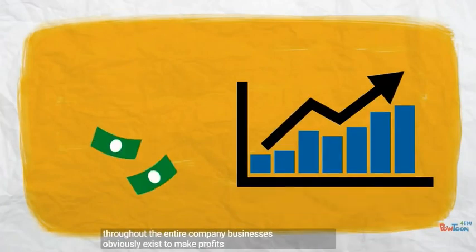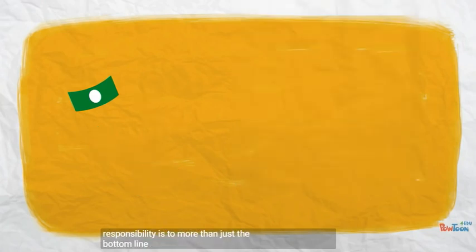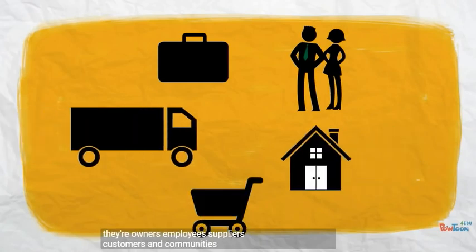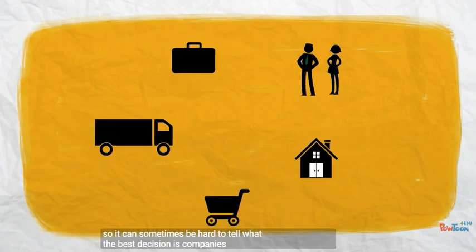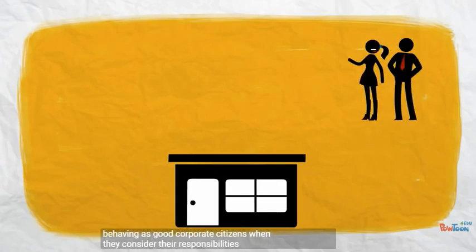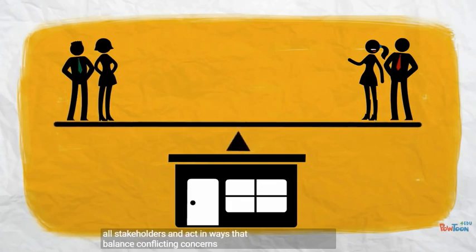Businesses obviously exist to make profits, but an ethical company recognizes that their responsibility is to more than just the bottom line. Their owners, employees, suppliers, customers, and communities may all have differing and often opposing interests, so it can sometimes be hard to tell what the best decision is. Companies are behaving as good corporate citizens when they consider their responsibilities to all stakeholders and act in ways that balance conflicting concerns.